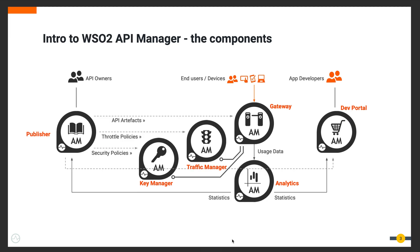When it comes to a distributed deployment architecture, it's important to have a clear understanding of the interfaces between the components that interact. For example, the publisher sends API artifacts to the gateways and also publishes traffic policies to the traffic manager. The gateway may need to interact with the key manager for security checks and with the traffic manager to enforce throttling policies at runtime. If analytics is enabled, the gateway also publishes runtime events to the analytics component.